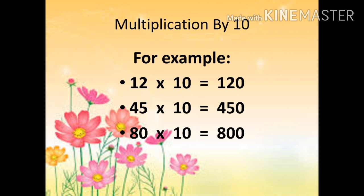First example: 12 multiplied by 10. We keep 12 as it is and put one zero, so it becomes 120. Second example: 45 multiplied by 10. Here also we will keep 45 as it is and put one zero, and it becomes 450. Third example: 80 multiplied by 10, that is equal to 800 — 80 as it is and put one zero.